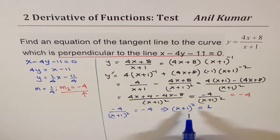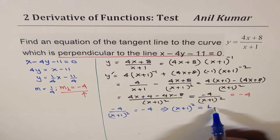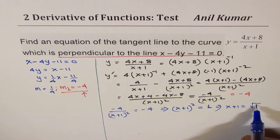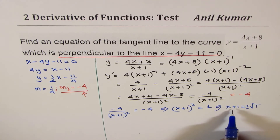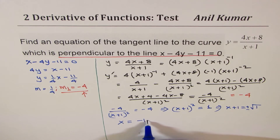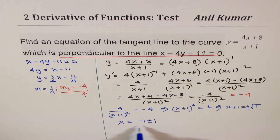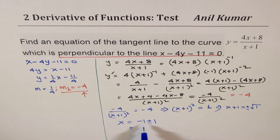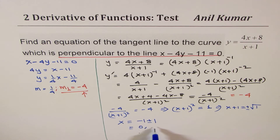Solving (x plus 1) squared equals 1, we get x plus 1 equals plus or minus 1, giving two values of x. So x equals minus 1 minus 1, which is minus 2, and x equals minus 1 plus 1, which is 0. These are the two values of x.